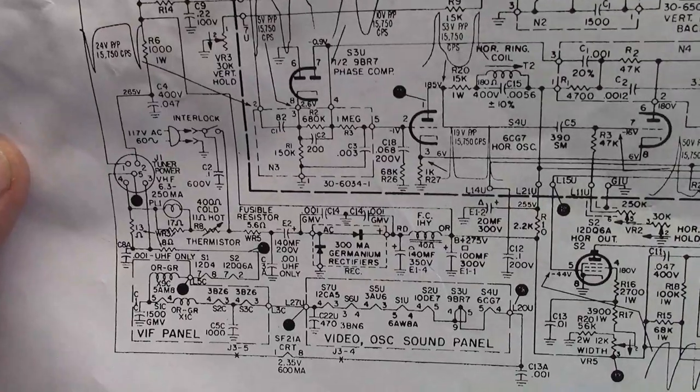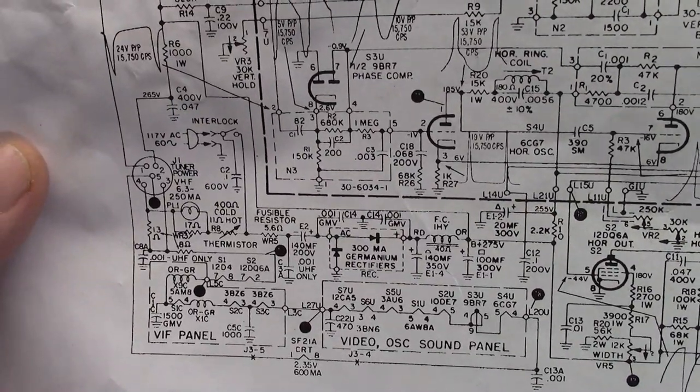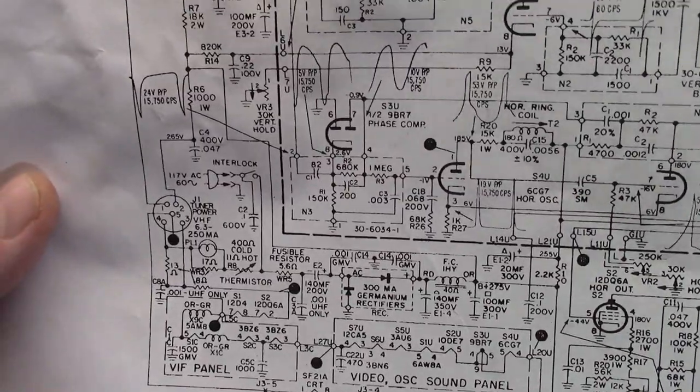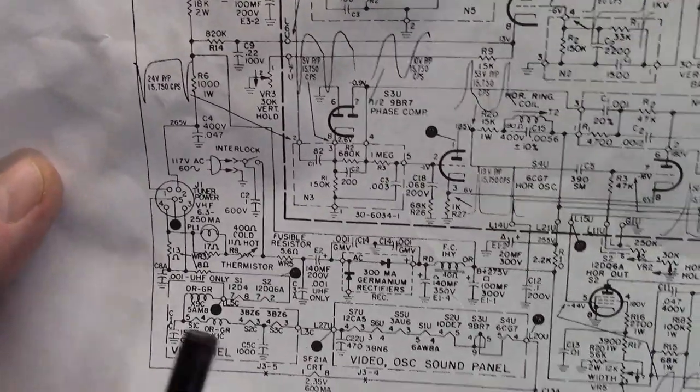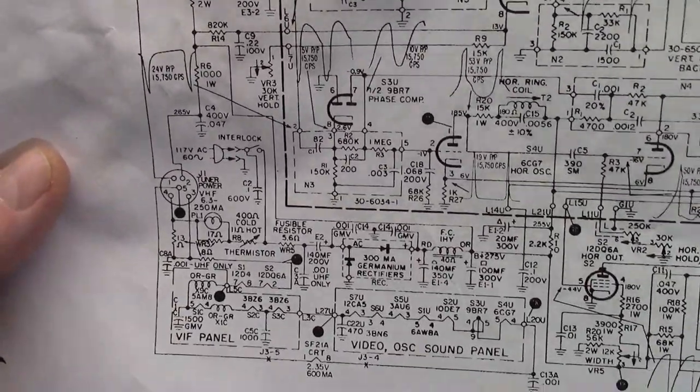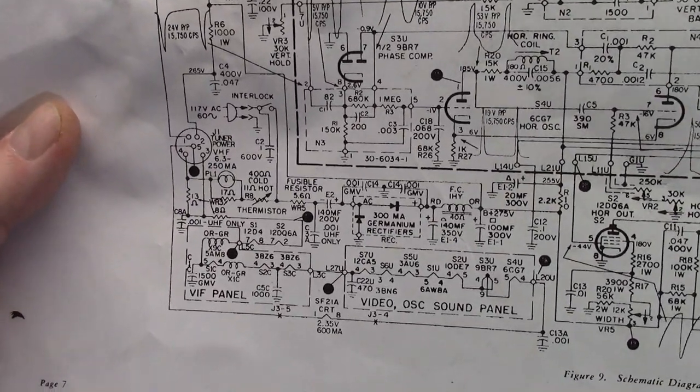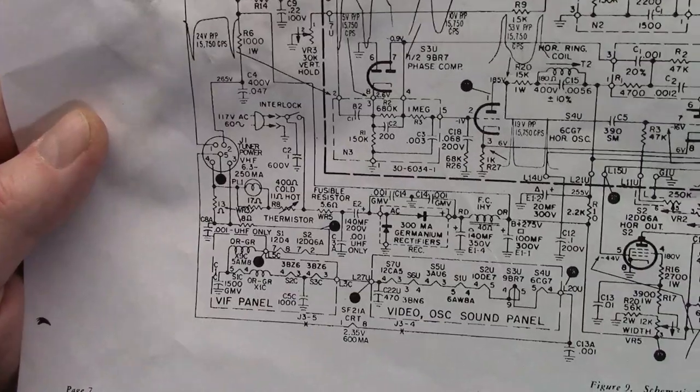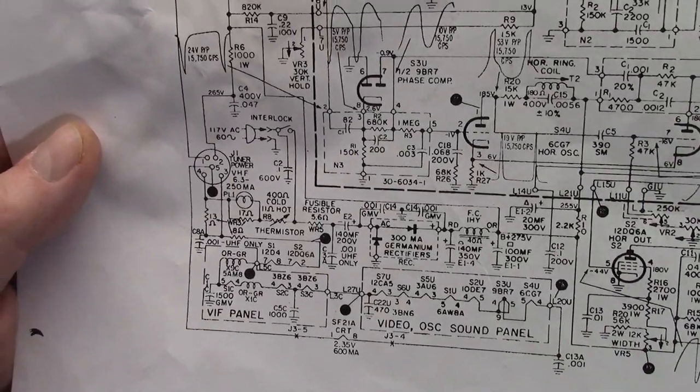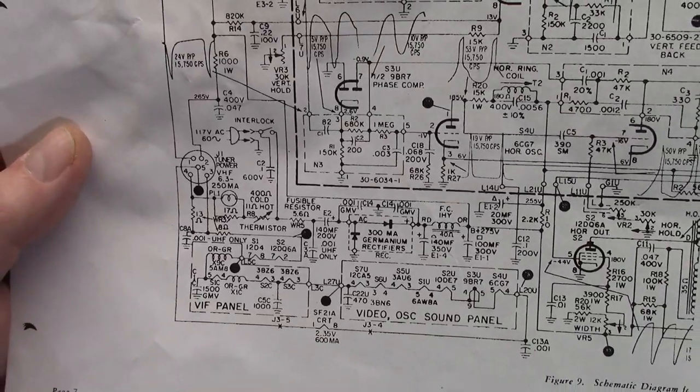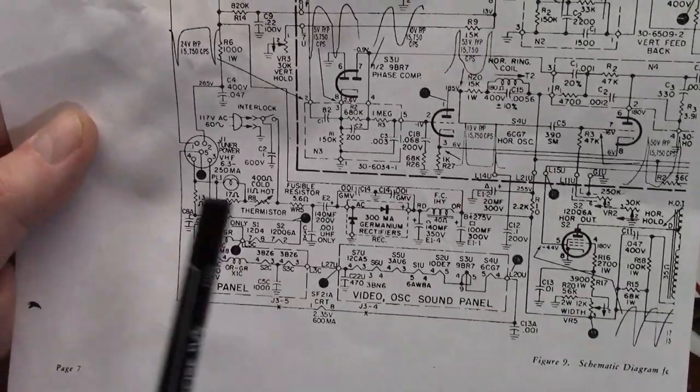That is a special type of resistor whose resistance changes with temperature. What they mean by cold is basically room temperature. At around room temperature, the set's been off for a long time. All the tubes have cooled down. If you took an ohmmeter, you would measure about 400 ohms. When the set is fully operational, all the tubes are lit up, everything's nice and warm, and the set is playing, if you were to measure that resistance, it would be around 11 ohms. I'll tell you what that's for in a bit.